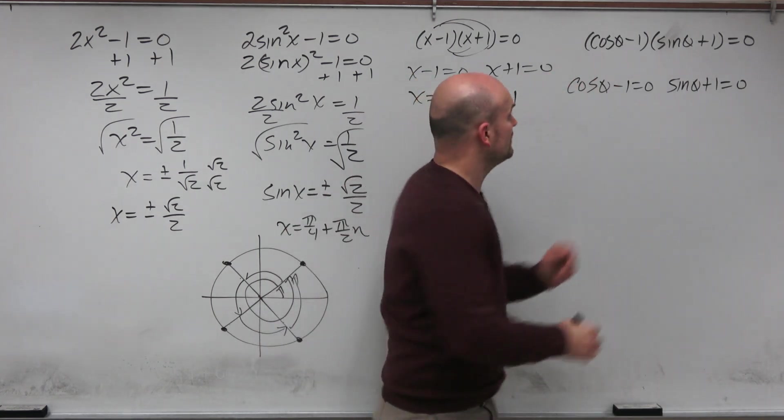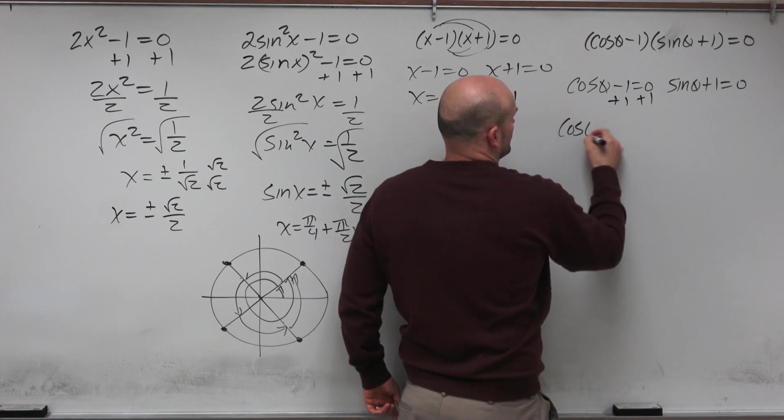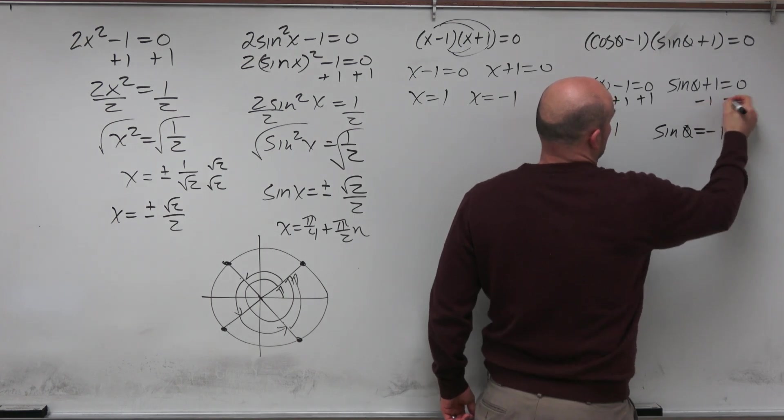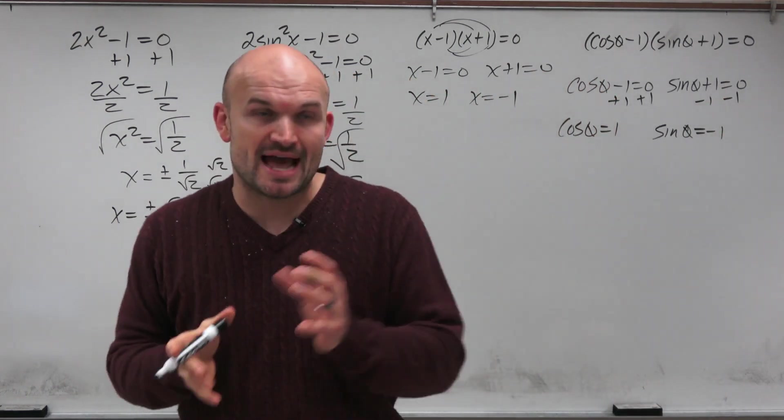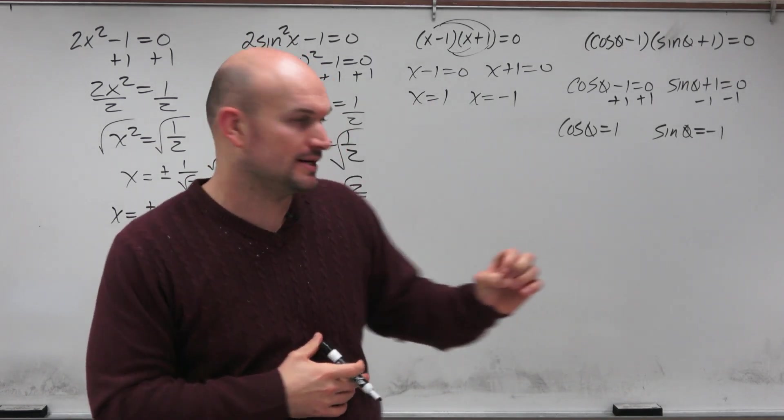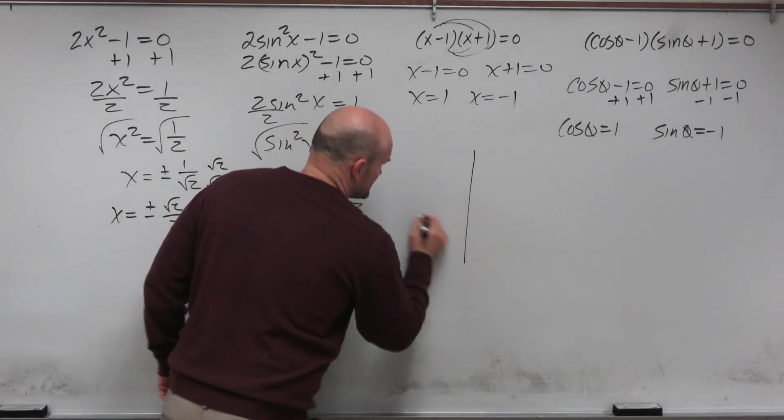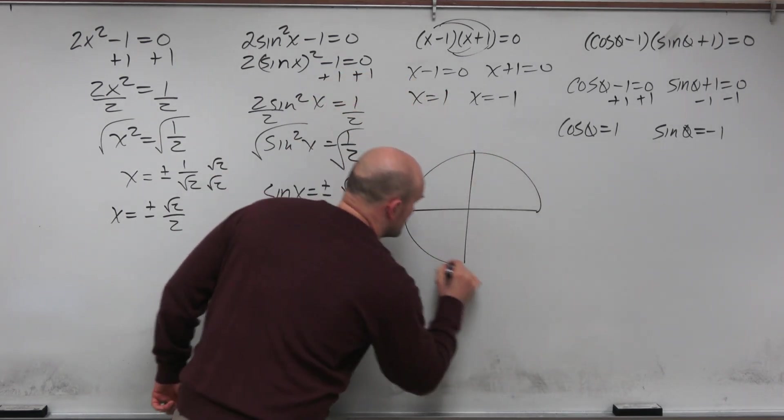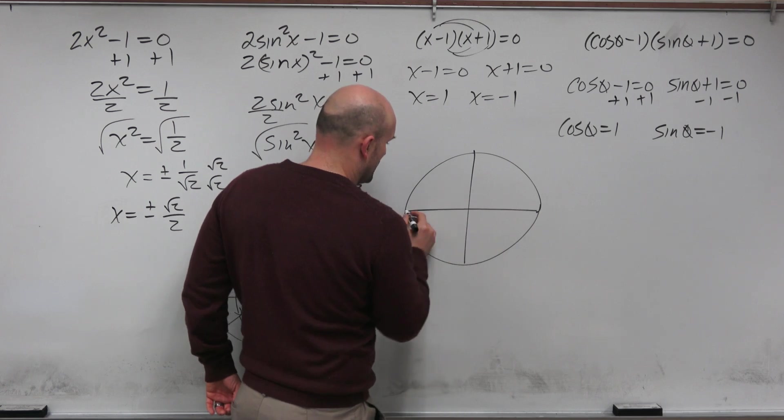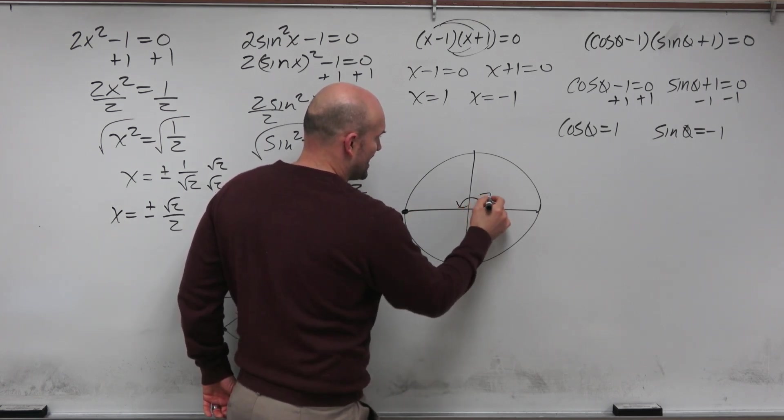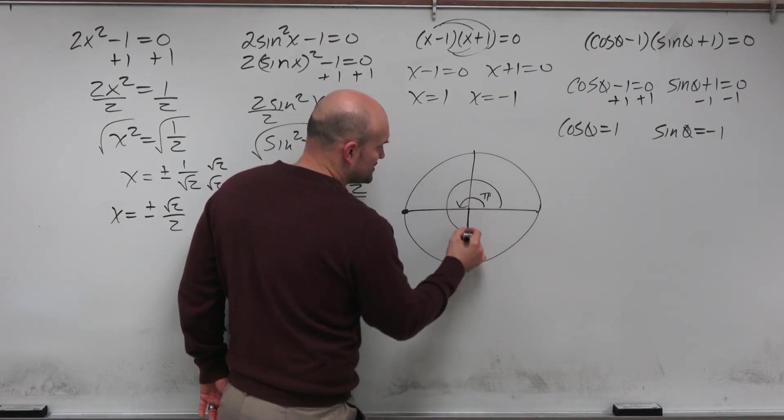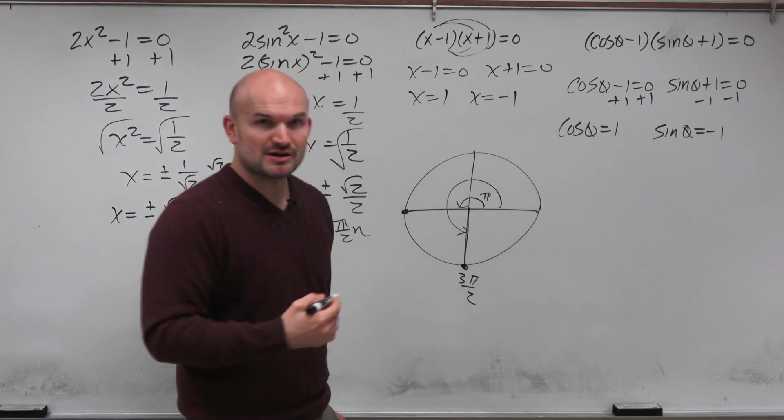Now, when you go ahead and solve, you just add 1, cosine of theta equals 1. And here, we have sine of theta equals negative 1. Now, again, we're looking for the angles that the cosine, where the x-coordinate is 1, and the y-coordinate is negative 1. So, again, let's go back to this unit circle. Now, we go and look at the unit circle in this case. We see the x-value is going to be 1 at this angle, which is pi. And then sine is going to be negative 1 down at this angle, which is 3 pi over 2.